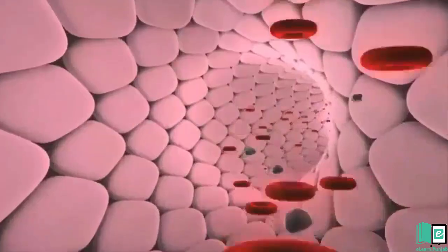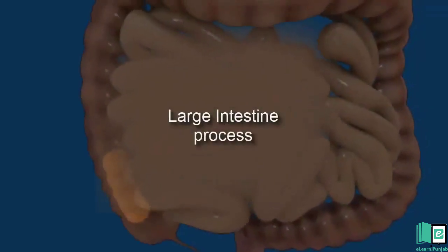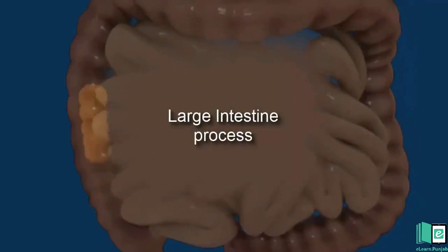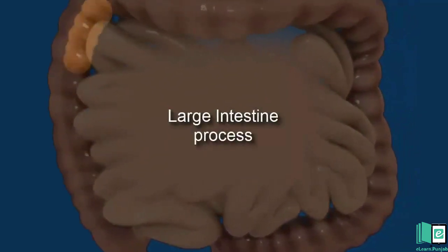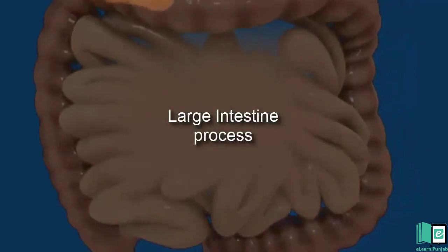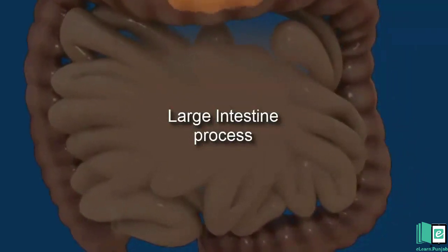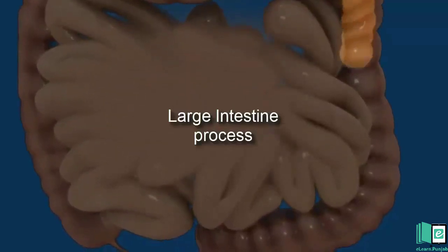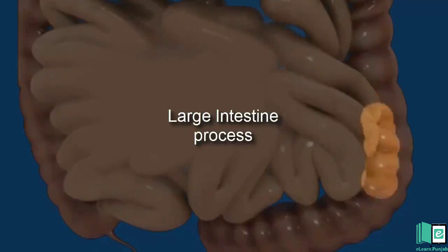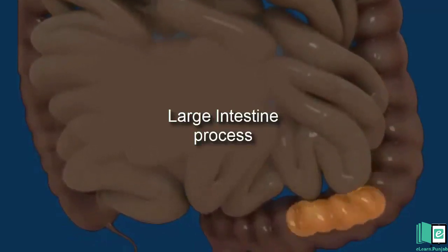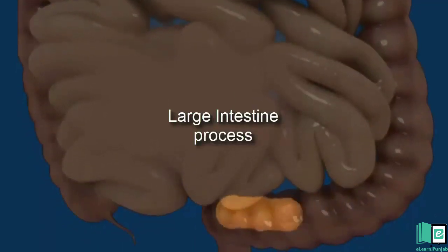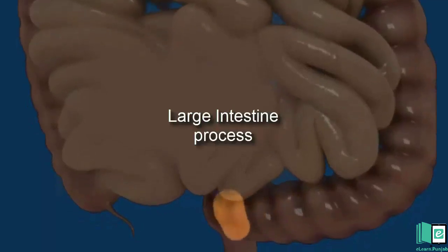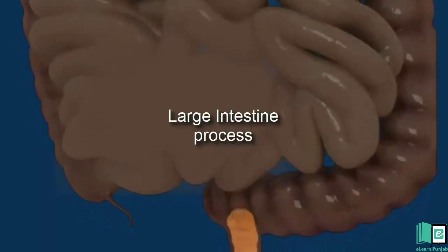The blood carries food particles to all parts of the body. The undigested parts of the food pass into the large intestine. Here the undigested food has a large amount of water. The main job of the large intestine is to absorb extra water. The undigested food becomes solid and is called feces. The feces is stored in the last part of the large intestine called the rectum. We pass the feces out of our body through the anus.